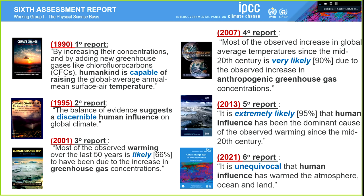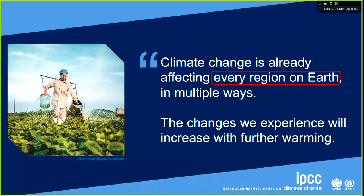So we made a step forward, and the other step forward we made is that we could write something like this: climate change is already affecting every region on Earth in multiple ways, and this change will be proportional to the warming. But how do we really do that? How can we say this? This is the first time that we can really assess the change on each of the regions, and we need to have a methodology.